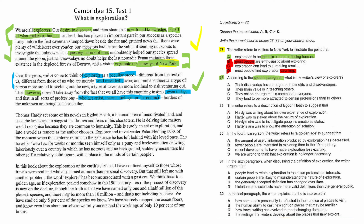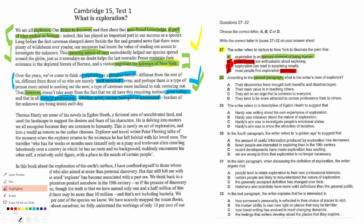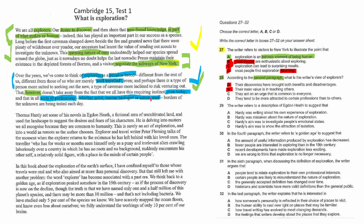So the 'however' reverses the course: the writer is saying it's not that only explorers are different, but that you and I are also different, regardless of profession. Option A mentions advantages and disadvantages — not relevant, rule it out. Option B mentions teaching others — rule that out. Option D says more attracted to certain professions — the opposite of what's said. Option C is correct: this quality is common to everyone.